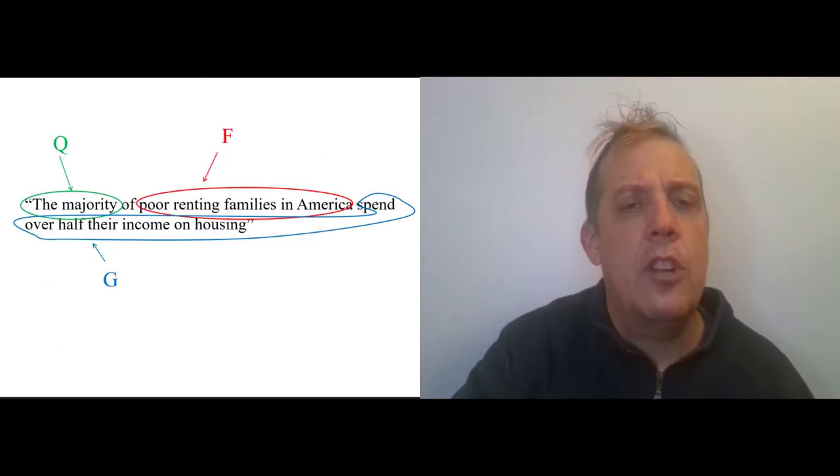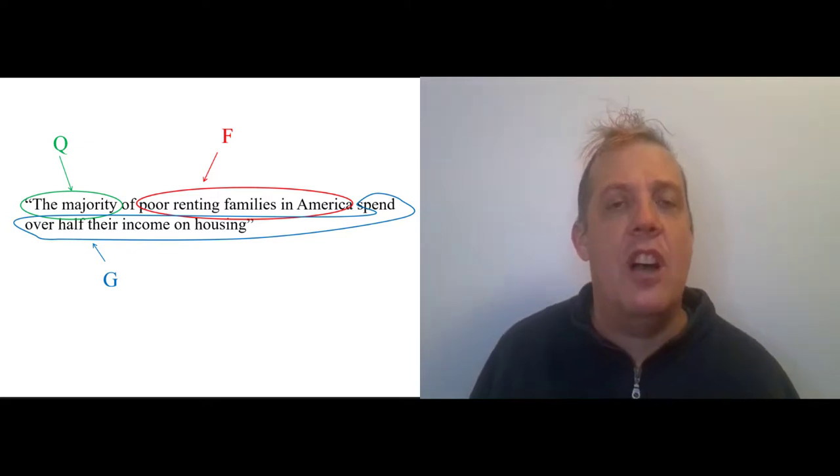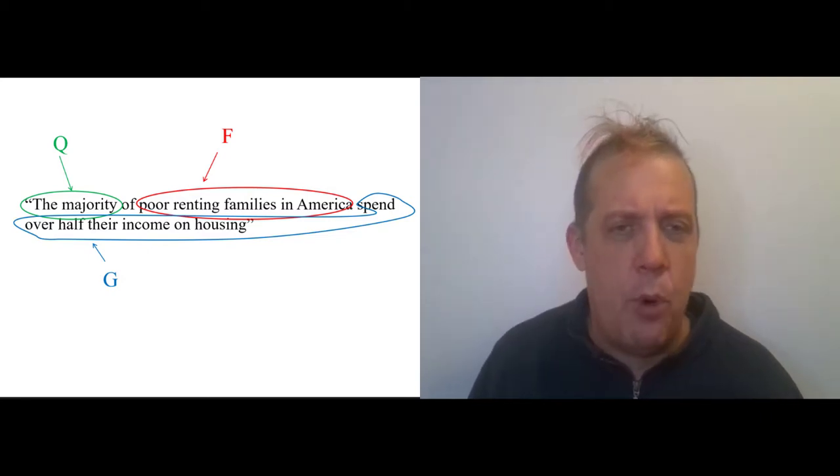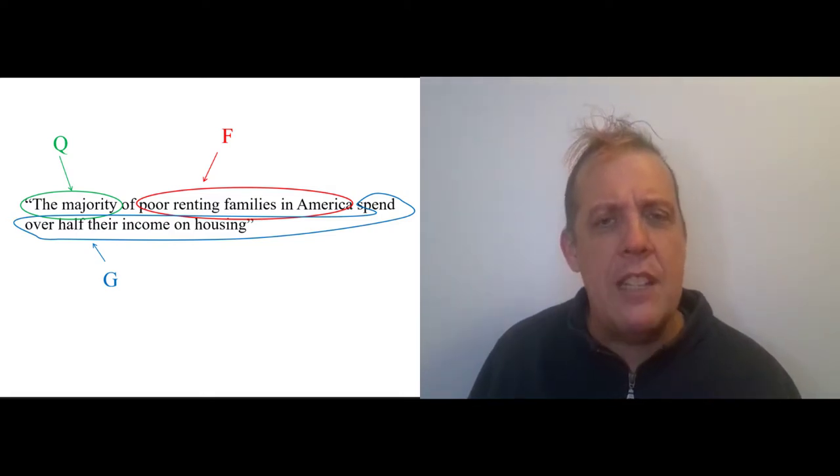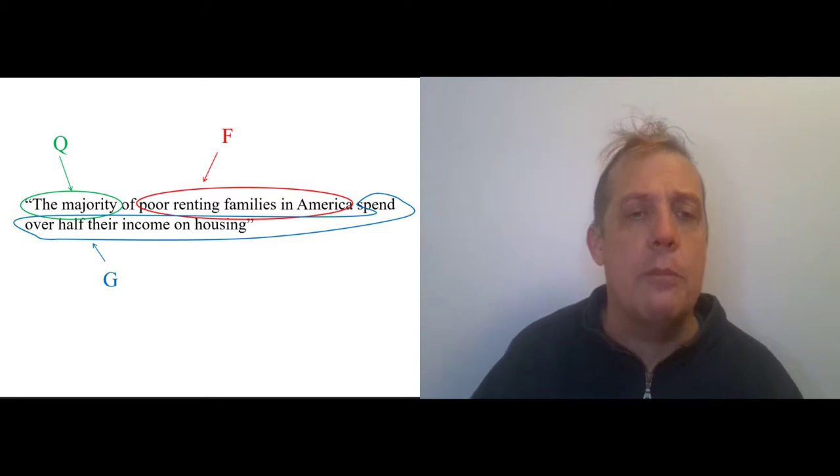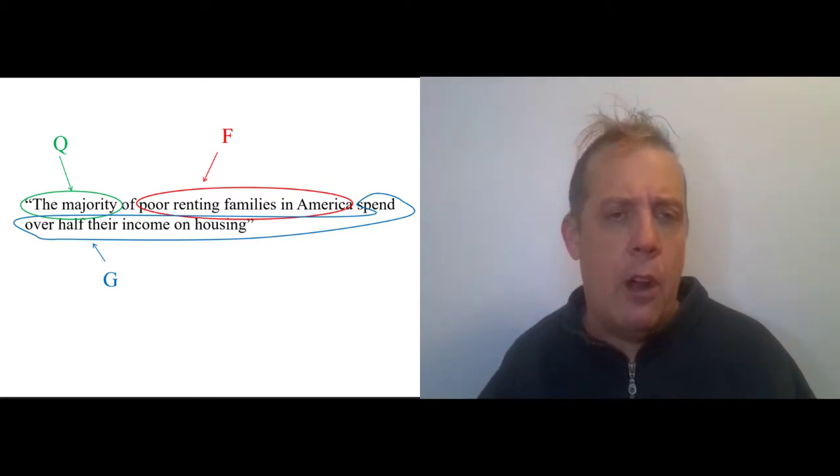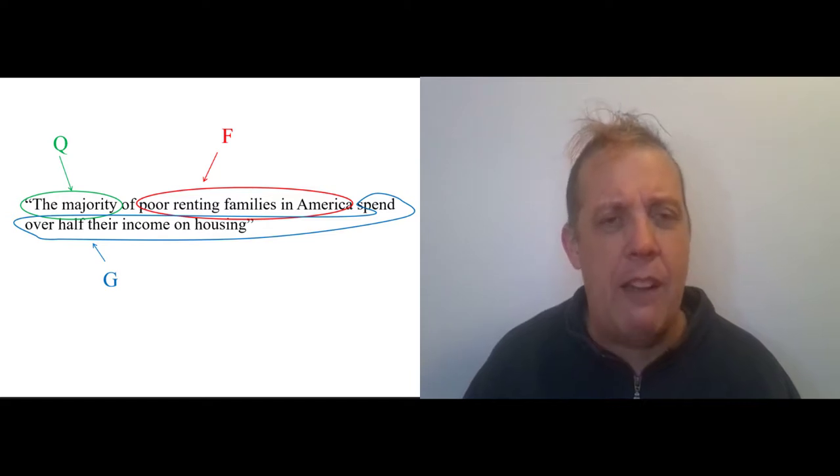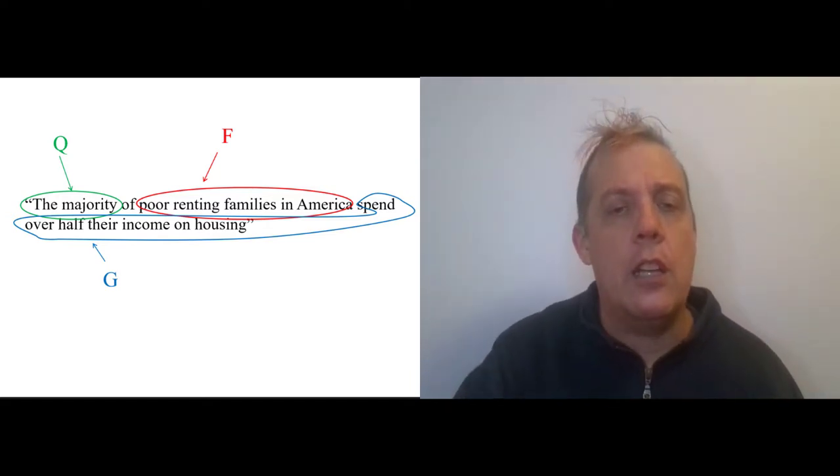Going back here, poor renting families in America is our category F. We could break this down into lots of subcategories—poor people, renting people, families—but we're not going to do that. Our property is being a poor renting family in America, and our values are just yes or no. The same for G: you could have a value that is the percentage of income you spend on housing, a number between 0 and 100, but here our variable is families that spend over half their income on housing, and the values are yes or no.